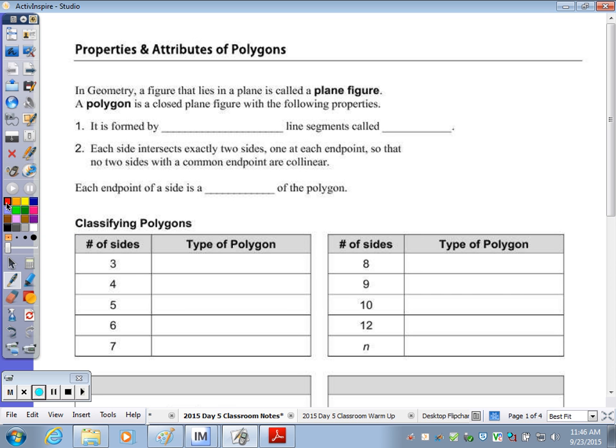Later on we'll get to 3D figures, adding that third dimension to form the solid. A polygon is a closed plane figure, and we'll look at what closed means, with the following property.